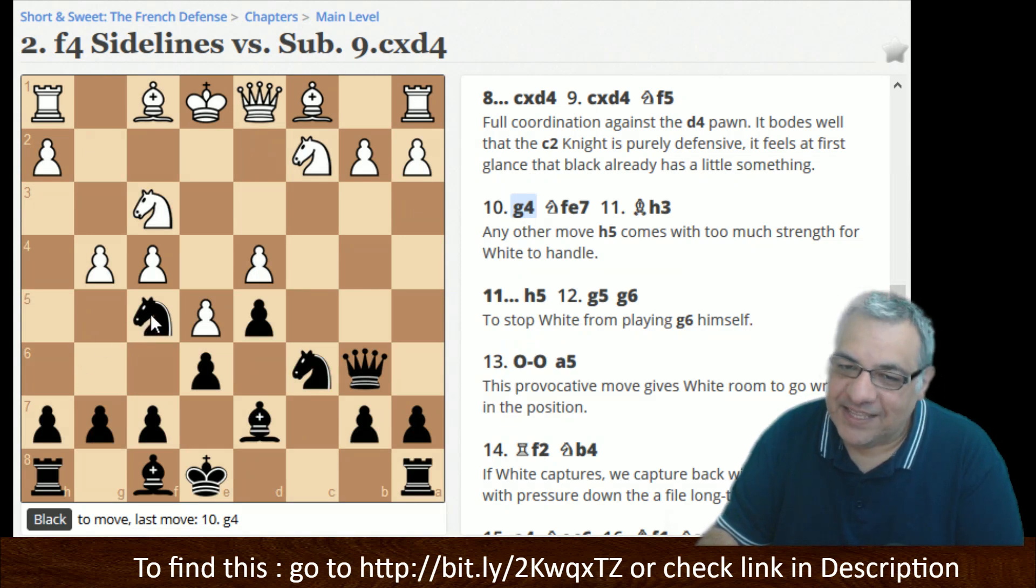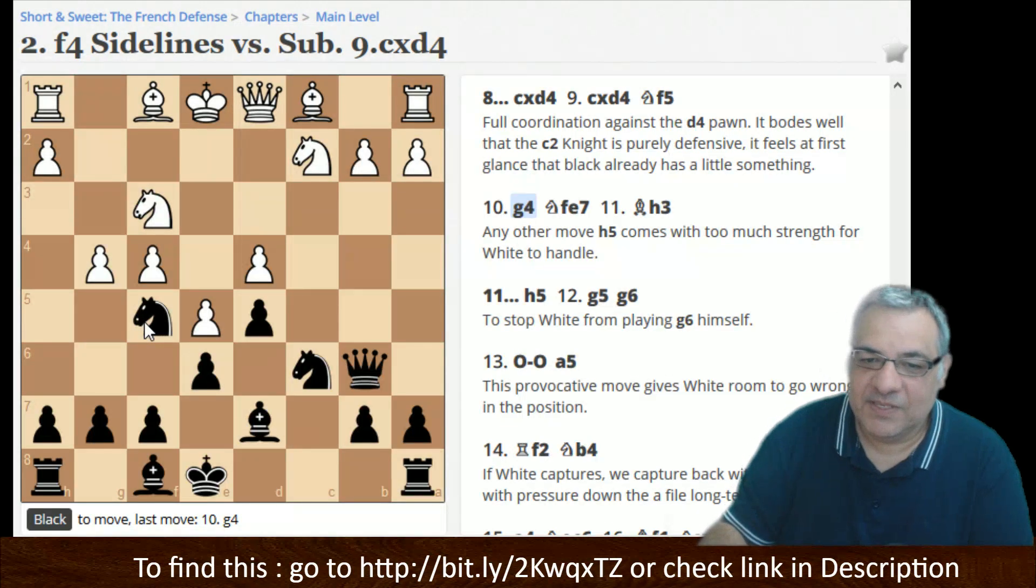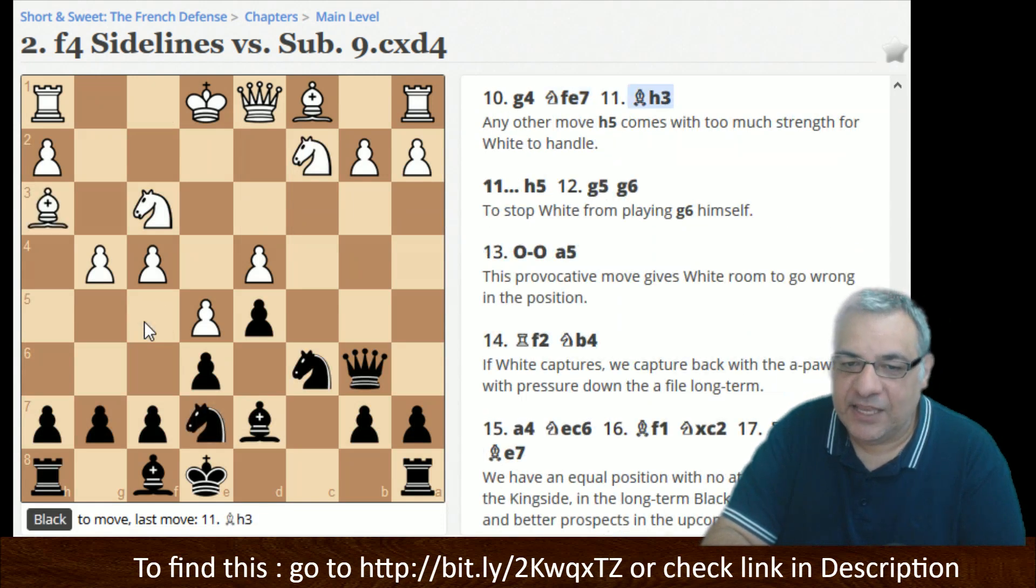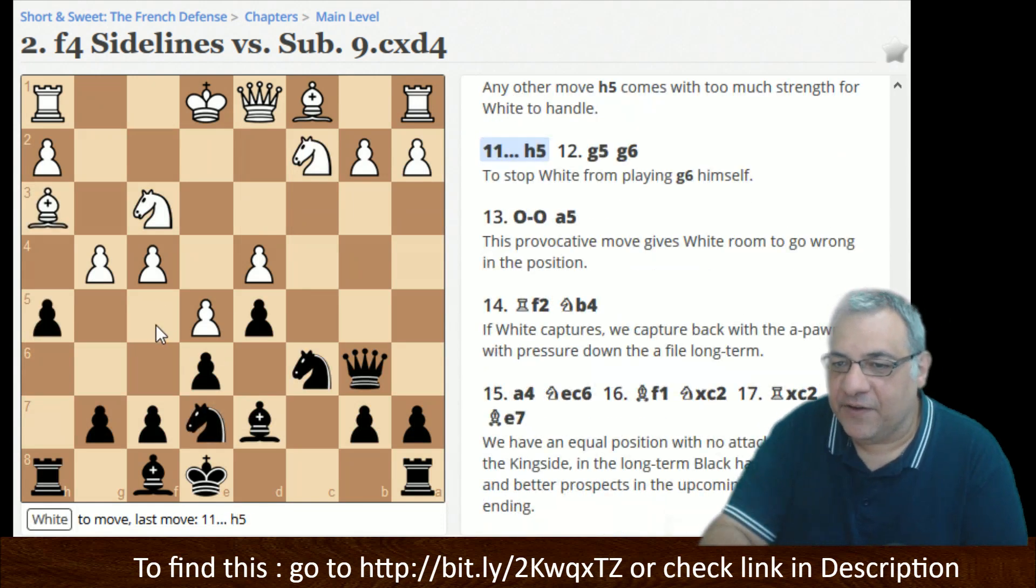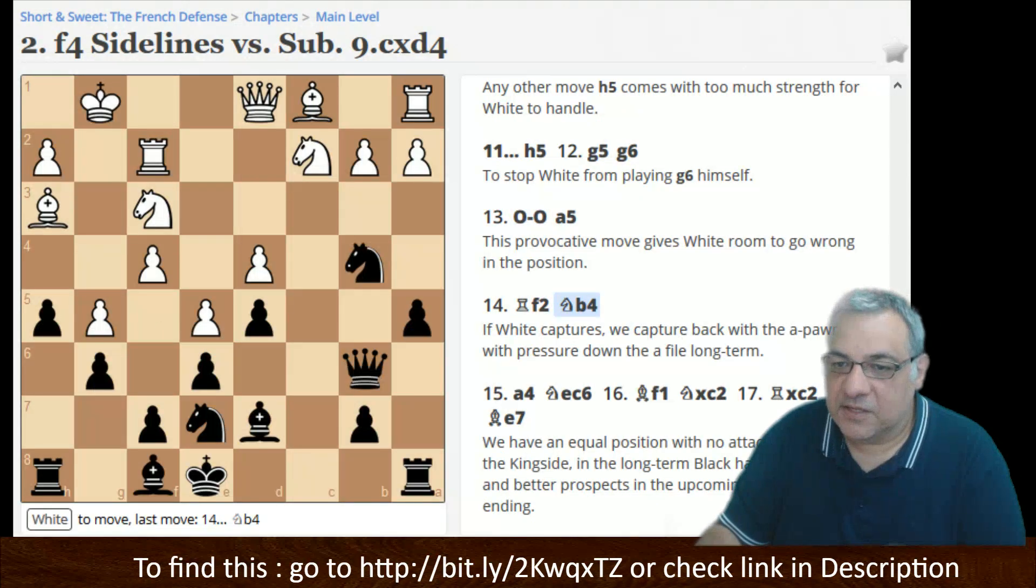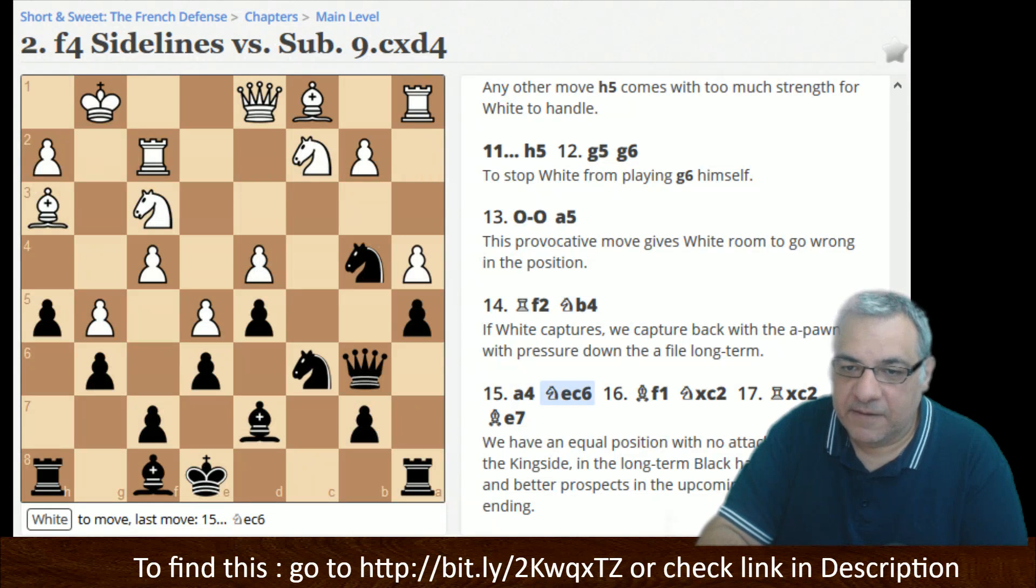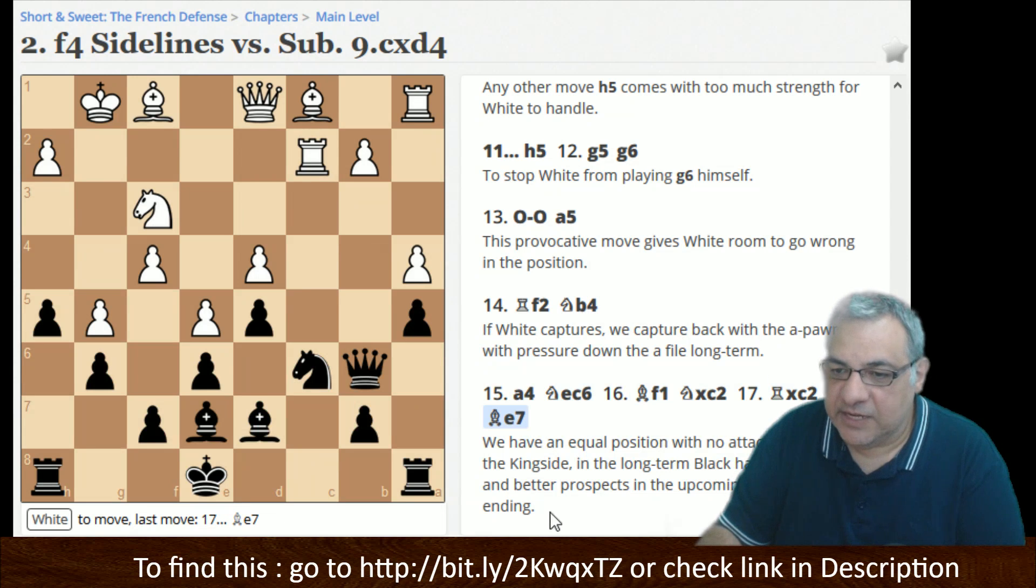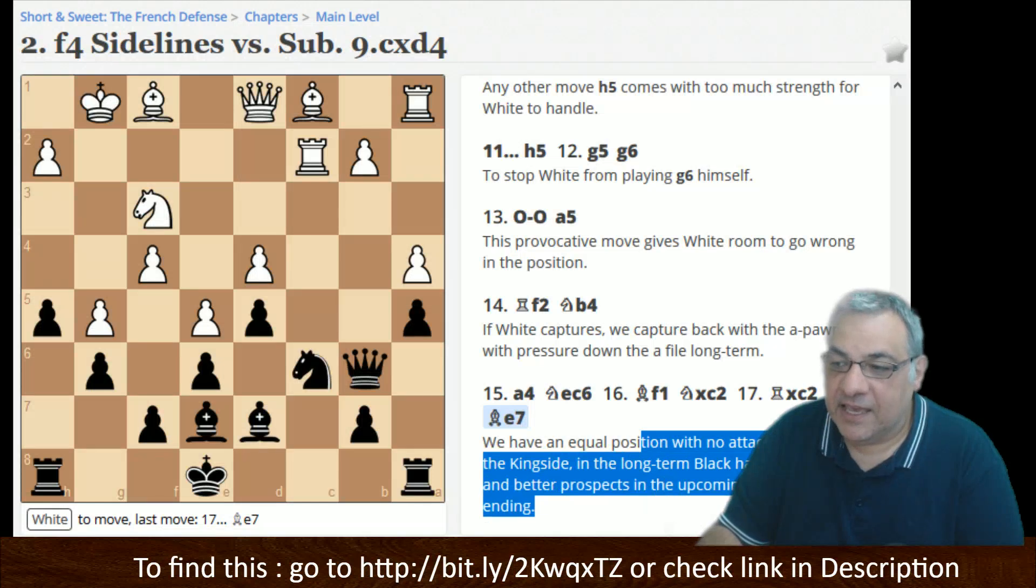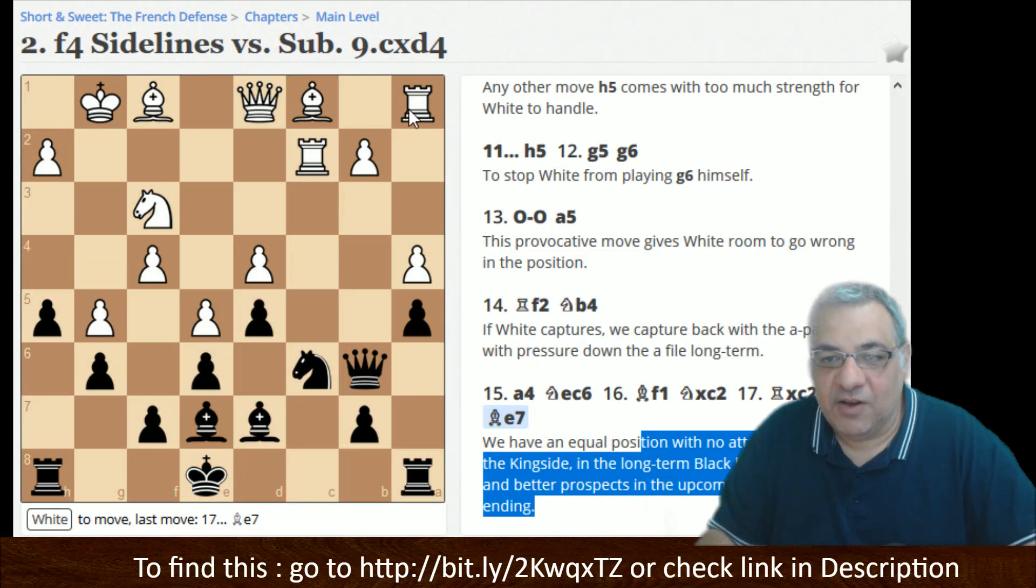White didn't really necessarily have to do g4. There are some other tricky ideas, but let's say g4 is played. What's the idea? You can put this back and you can try and undermine the f5 square. So this is great stuff to absolutely know. The rest, b4, so knight b4, and you've got a very nice secure position here with the black pieces. So an equal position, no attack for white on the kingside, and in the long term black has the safer king and better prospects in the upcoming heavy piece endgame. So I really like the recommendations. Check out this Short and Sweet.